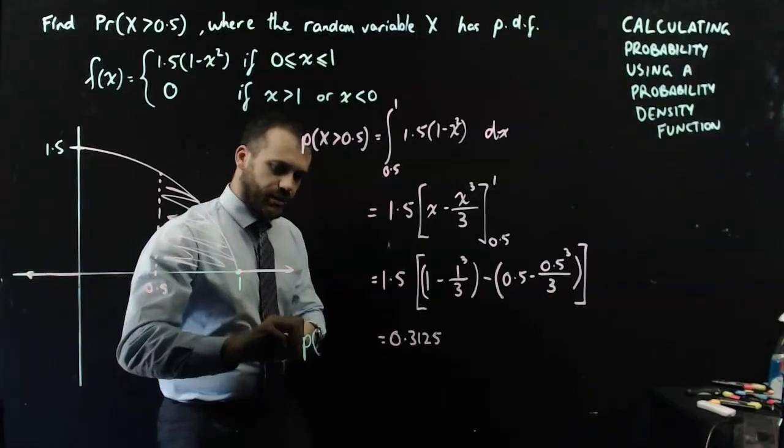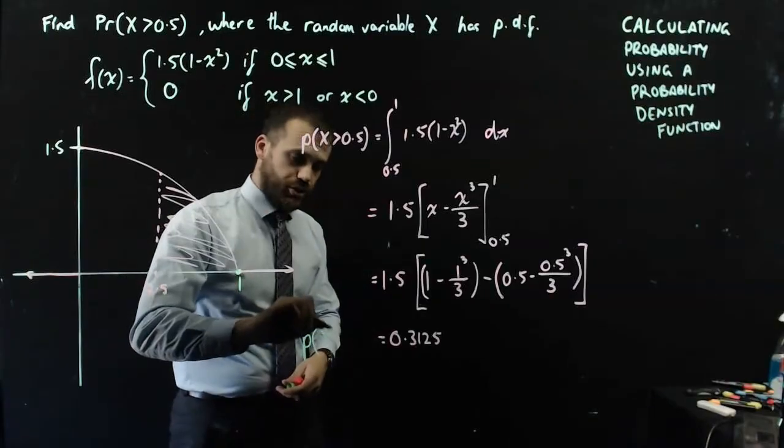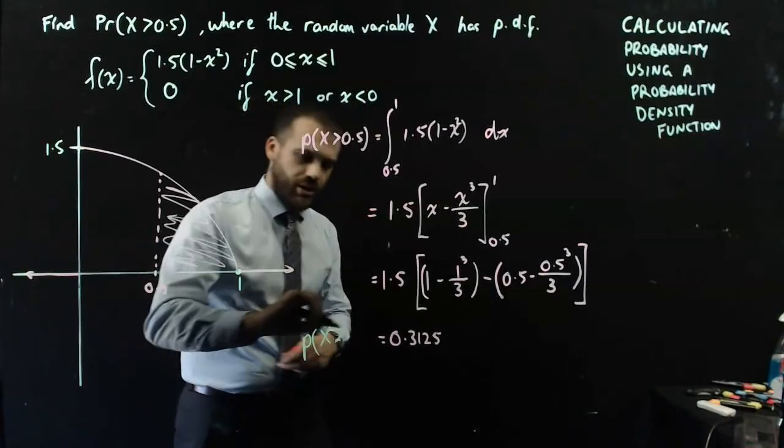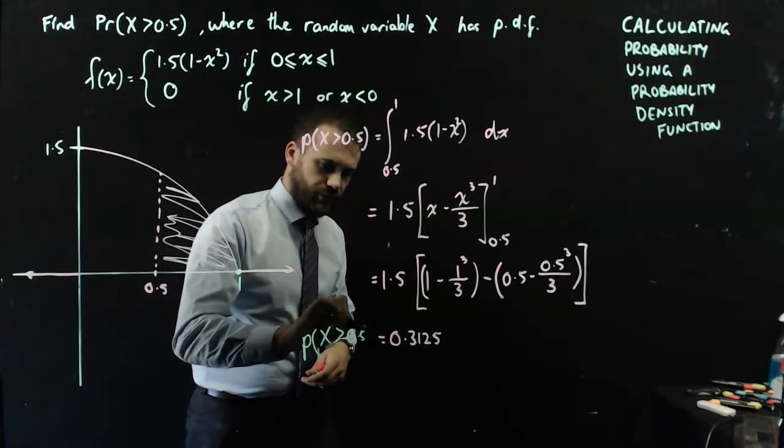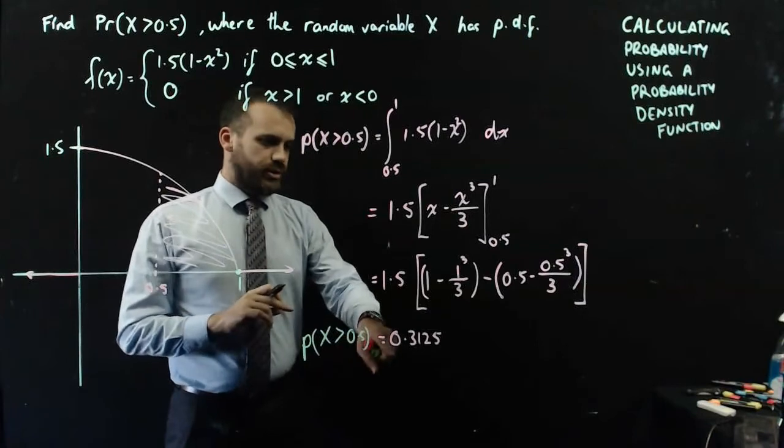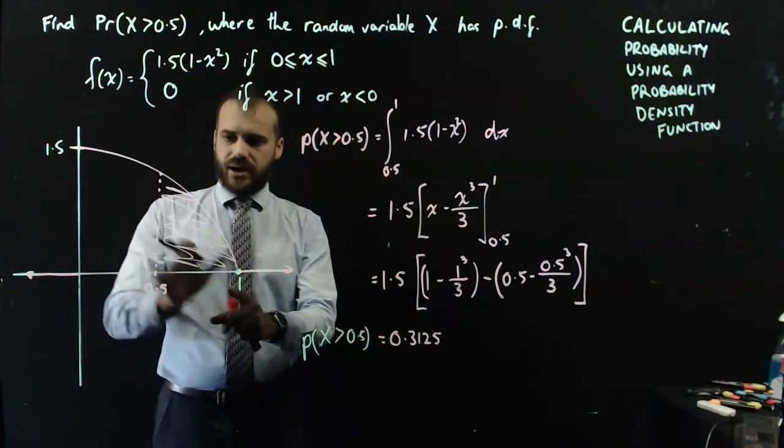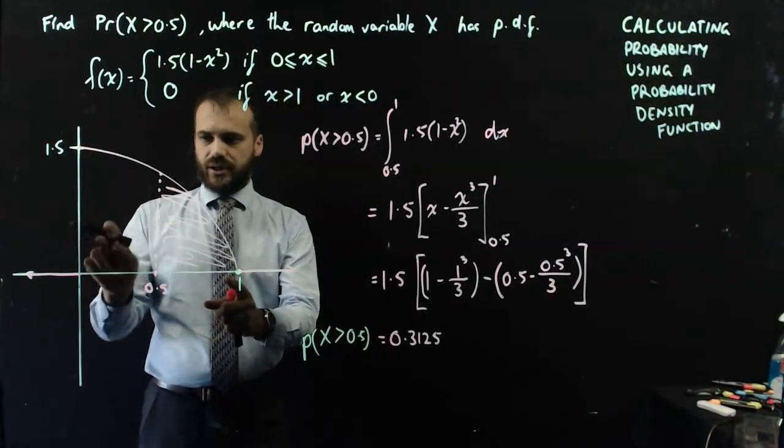Now, what does that mean? It means that the probability that our random student got a grade or a percentage more than 0.5 is equal to 0.3125. And that's the area under this curve as a percentage of the full area.